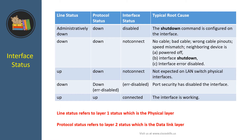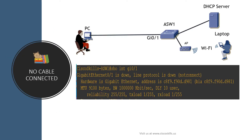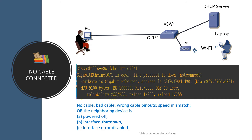You can use this table to find out why an interface is not working properly. In the first scenario, you logged into Cisco switch asw1 and issued the command 'show interface gi0/1', and you see the interface is down and the line protocol is down. From the table, the root cause could be: no cable connected, bad cable, wrong cable pinouts, speed mismatch, neighboring device powered off, neighboring device interface shutdown, or the neighboring device interface has an error-disabled state.